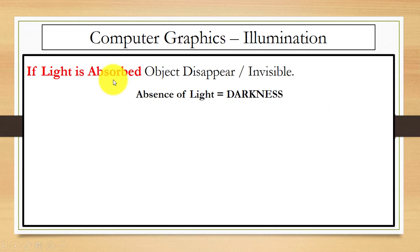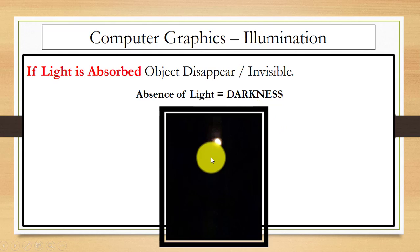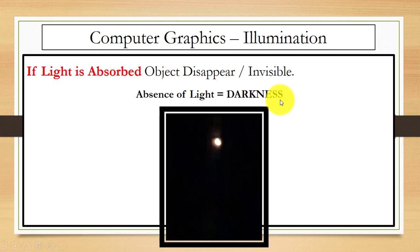If light is absorbed, then the object is invisible — or you can say it disappears. That is, absence of light is darkness. For example, moonlight is not as strong as sunlight. So absence of light is darkness — if light is completely absorbed, the object disappears or is invisible, because when light falls on the object surface, the object becomes visible. If light is completely absorbed, we cannot see the environment around us.